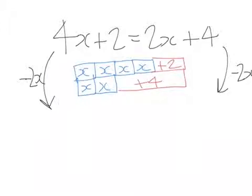Now, on my bar model, what I have done is I have taken away 2x from the top and 2x from the bottom. And that has left me with 2x plus 2 on the top of my bar and 4 on the bottom bar. And that makes sense. 4x plus 2 take away 2x is 2x plus 2. And 2x plus 4 take away 2x is 4.